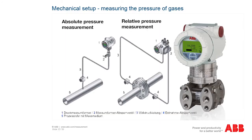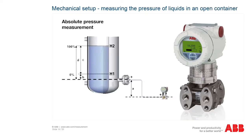To measure gases, the sampling point must be located above or at the side of the process line. The pressure transmitter must be mounted with the cable entry pointing downward to prevent liquid ingress. The connection leads should be provided with a drip loop if possible. The pressure transmitter must be attached next to or above the sampling point.